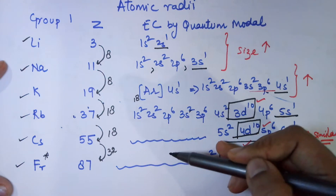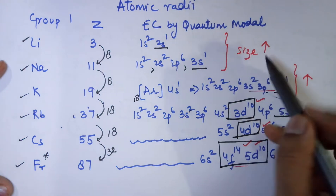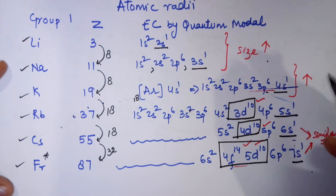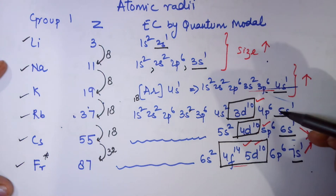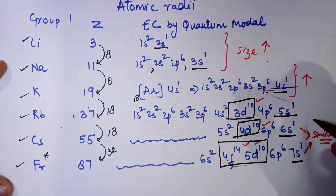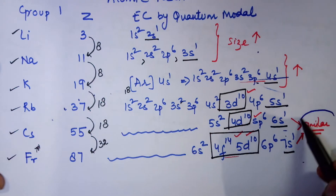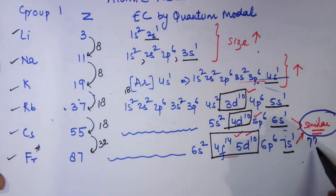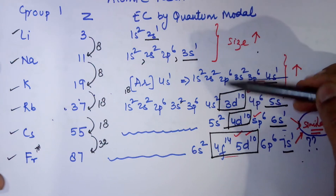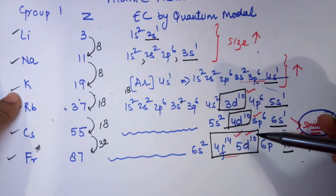Down the group, from lithium to sodium there is an increase in size, and from sodium to potassium there is also a rise in size. But as soon as we go from potassium to rubidium, the size increases less. From rubidium to cesium, the size increases less again. And in fact, when we move from cesium to francium, the size is almost similar. So down the group, initially there is a rise in size, then the magnitude of increase becomes less, and finally the atomic radii are almost similar.